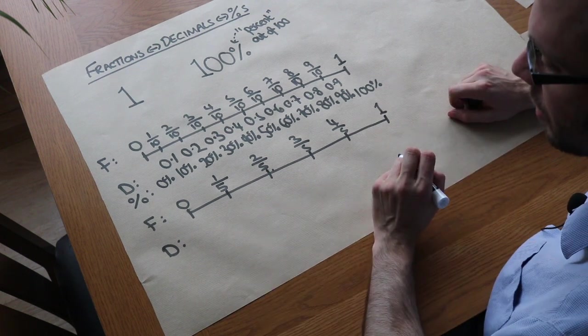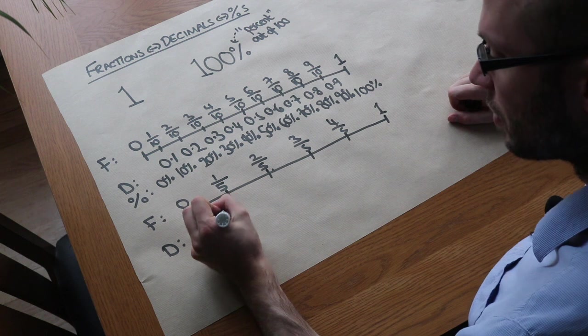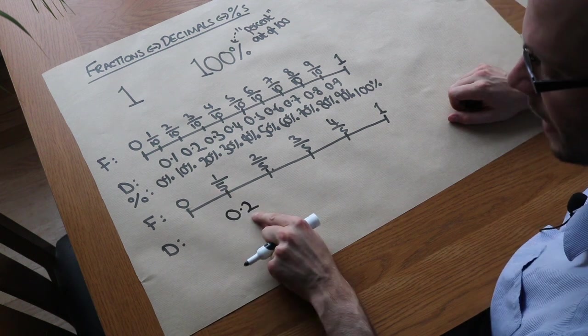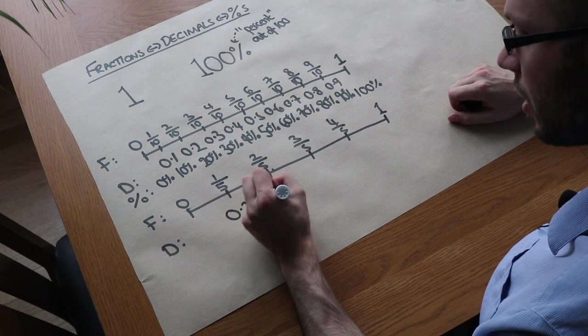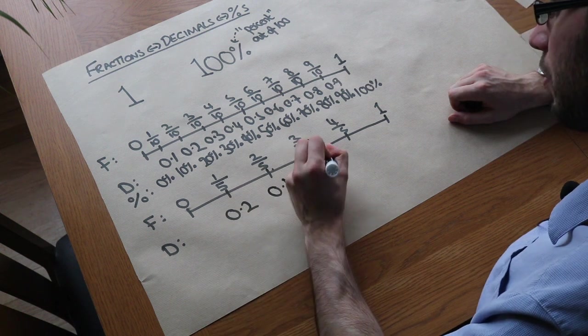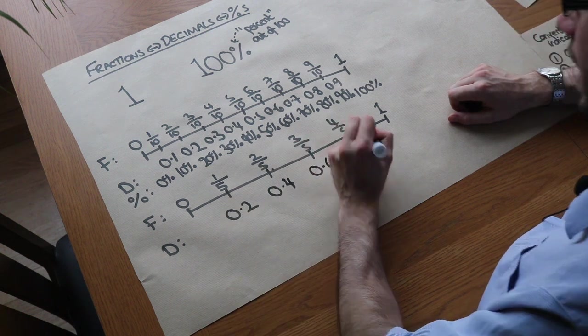And how do we write 2 tenths as a decimal? Well, 0.2. That's the tenths digit, and we've got 2 of them, so that's 2 tenths. So we've got 0.2, 0.4, 0.6, 0.8, and then a whole.